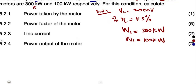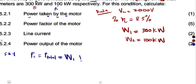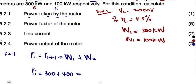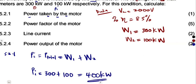For part 5.21, calculate the power taken by the motor. The power taken is the input to the motor, which is our total power — the sum of the two watt meter readings. So watt meter one plus watt meter two: 300 plus 100 gives us 400 kilowatts.